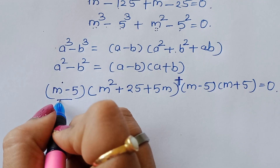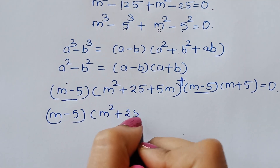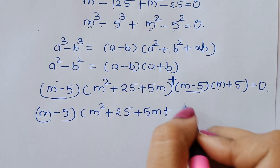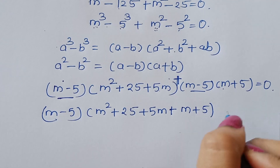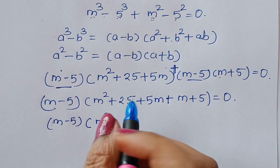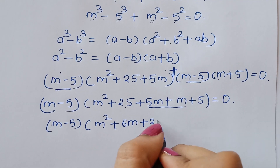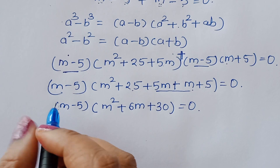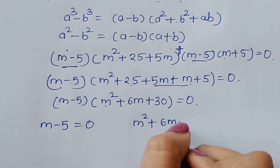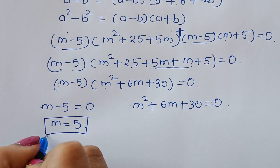Taking m minus 5 as common factor: m minus 5 times the quantity m square plus 25 plus 5m plus m plus 5, which simplifies to m minus 5 times m square plus 6m plus 30 is equal to 0. So m minus 5 equals 0, giving us the first value m is equal to 5.